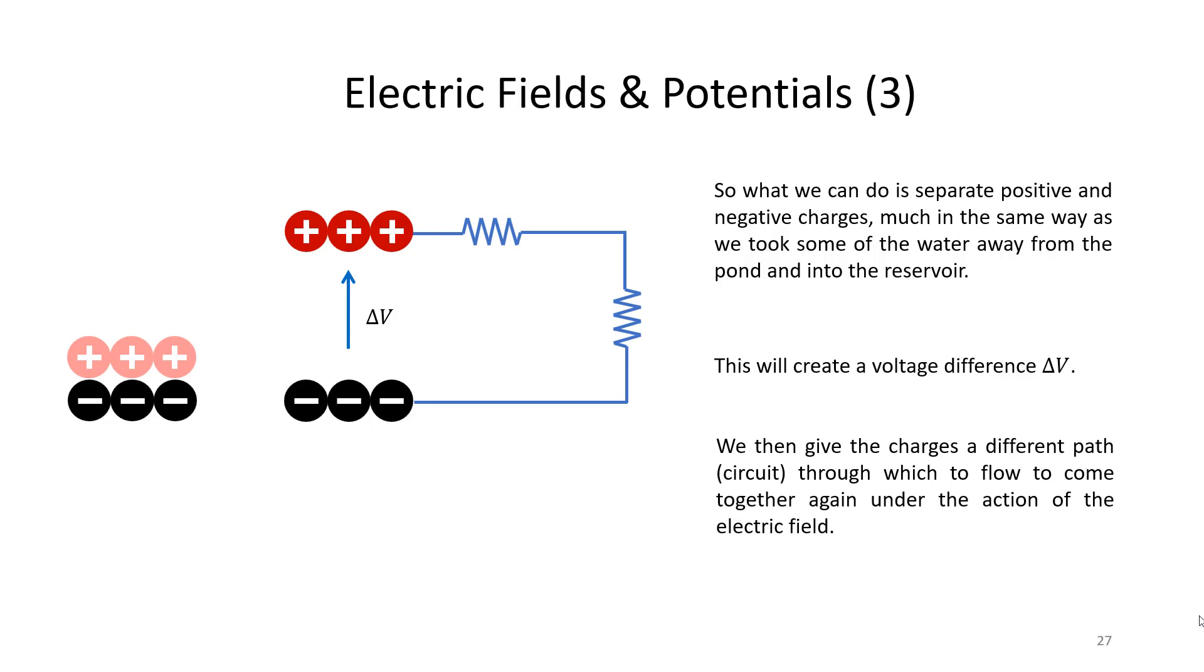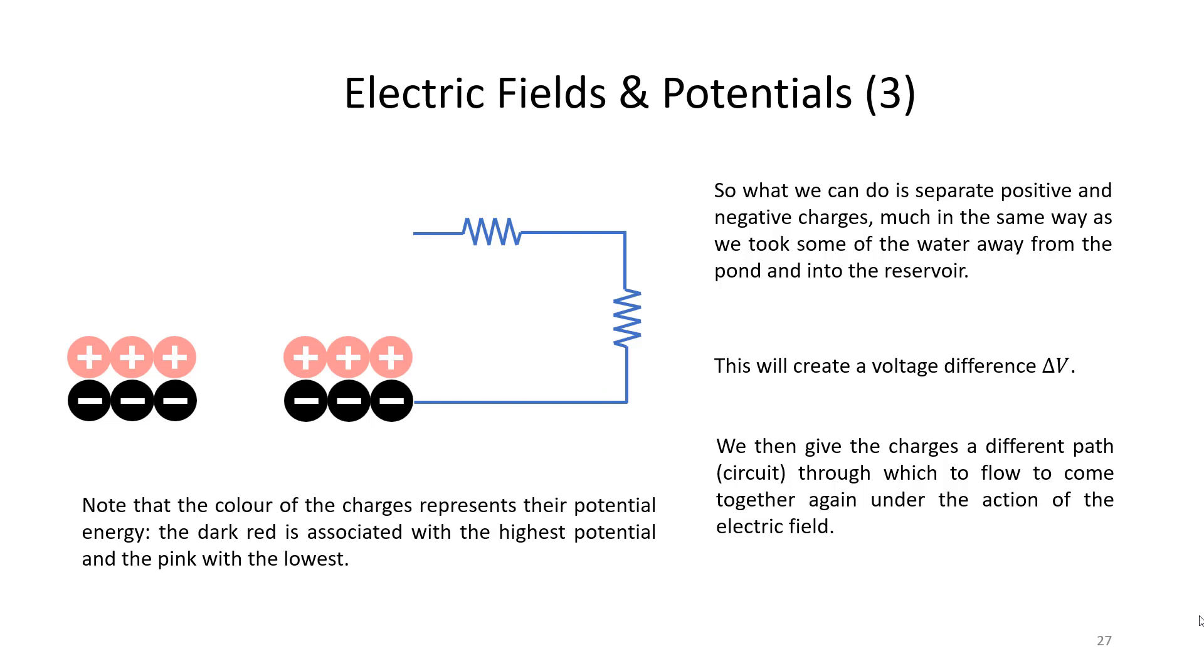So once we've given the positive charges the potential to do something, and that would normally be to come back down to the negative charges, we'll let them do just that, but we'll give them a different path to achieve that particular journey. And this will be useful to us, because that path would be an electric circuit, and the electric circuit will be set up in such a way as to carry out some useful function for us. So you can see that as we flow through the circuit, the charges lose their potential energy as they went through some elements called resistors, which we'll talk about later on. And then, of course, once they've got back to the negative charges, they've lost their potential energy entirely.